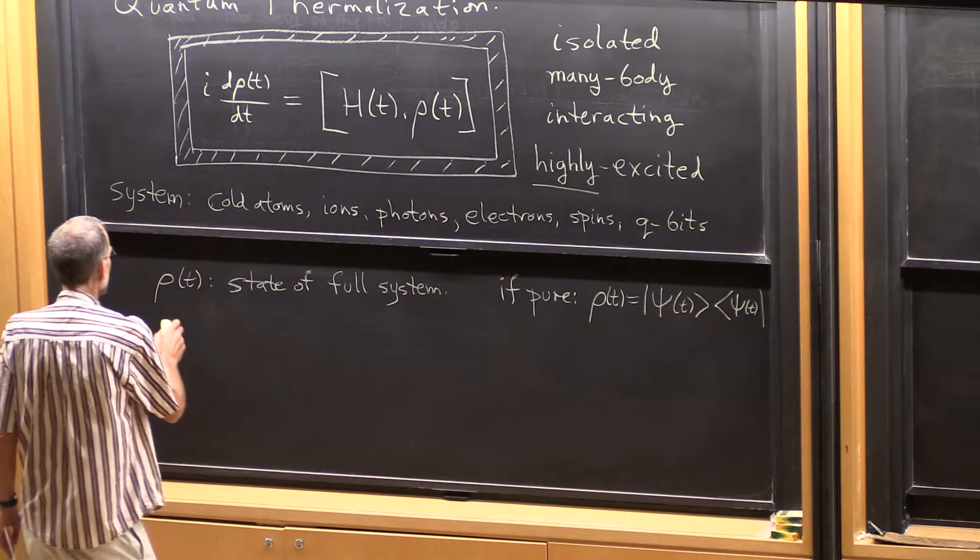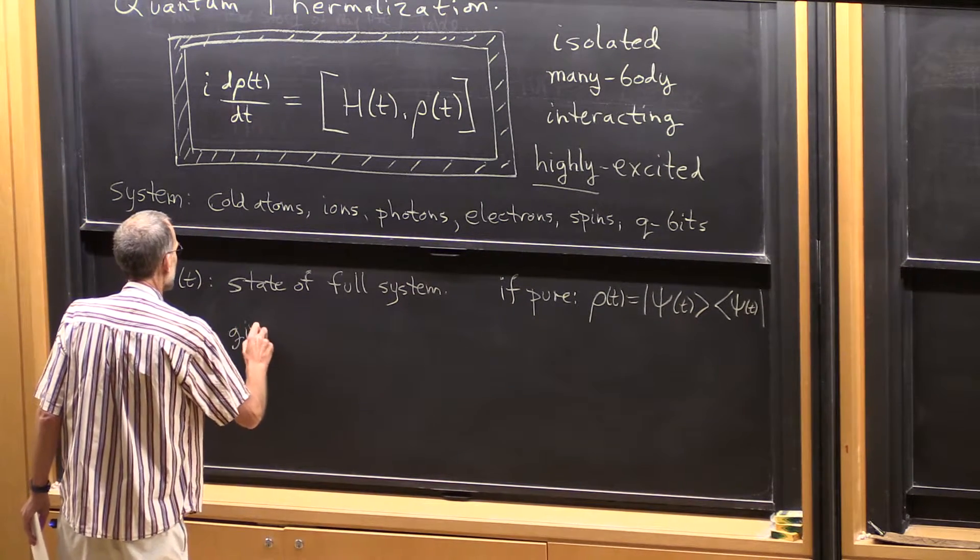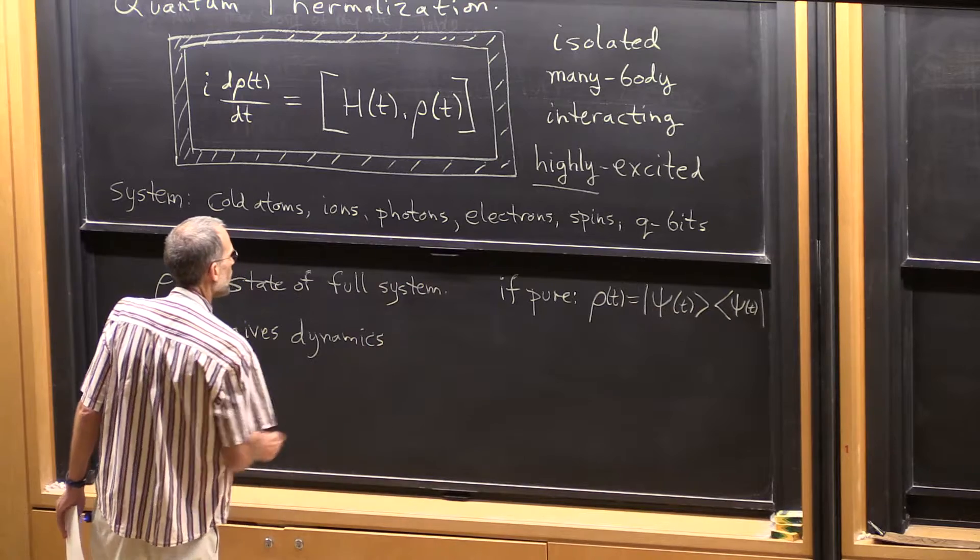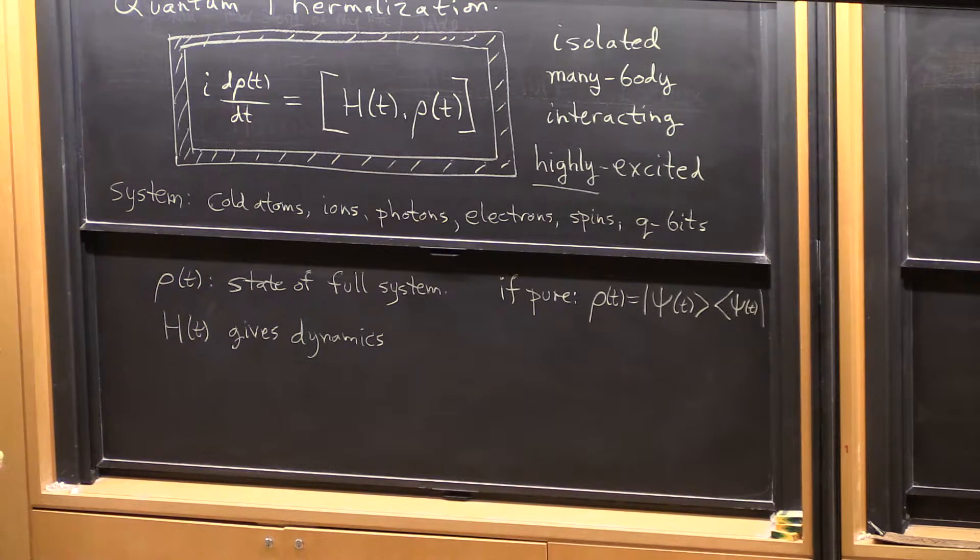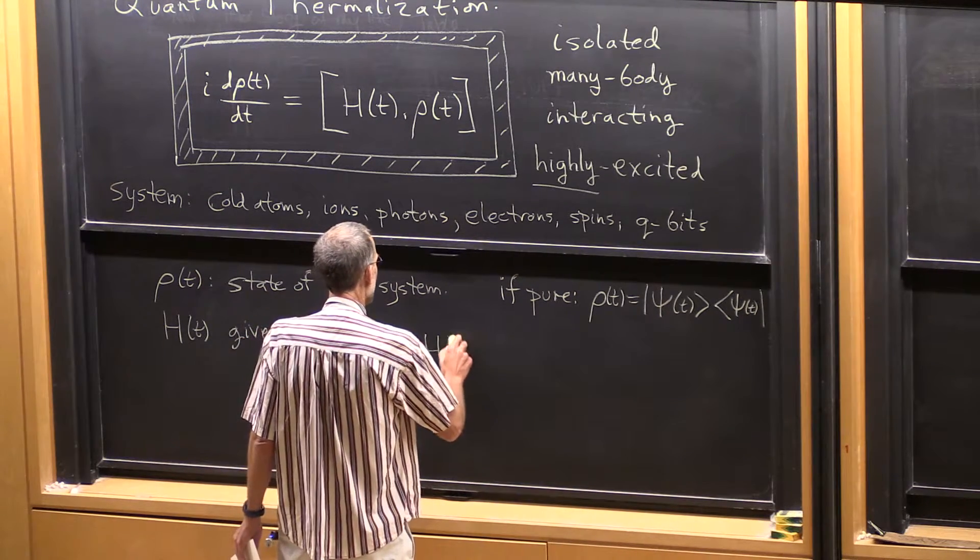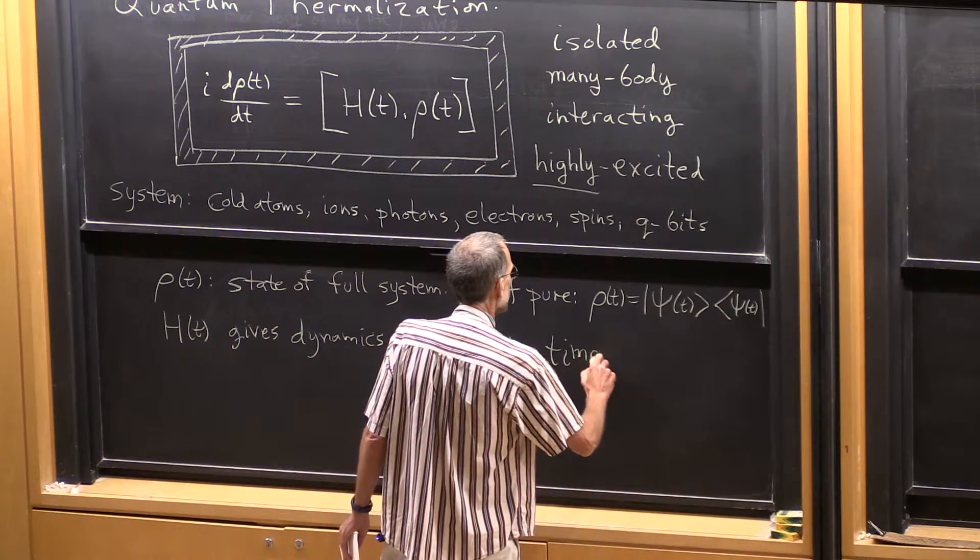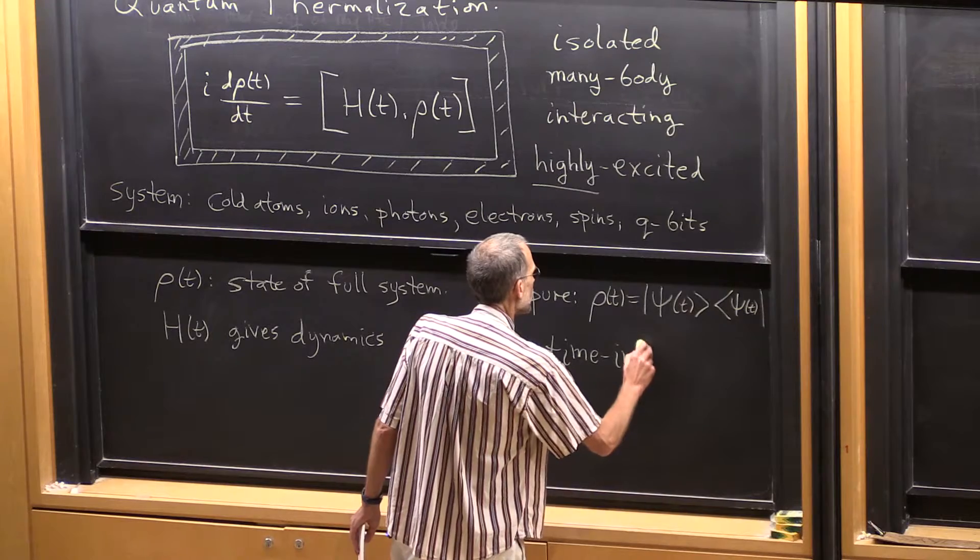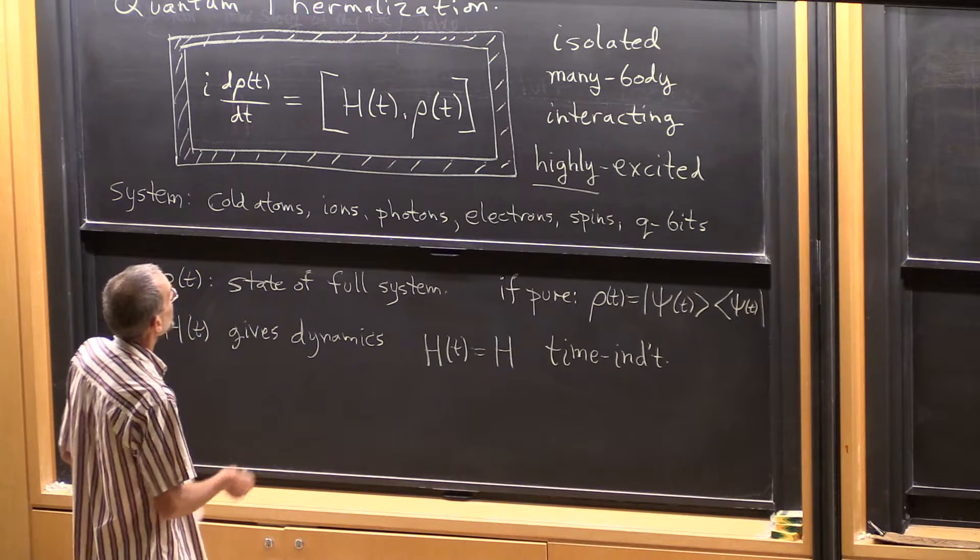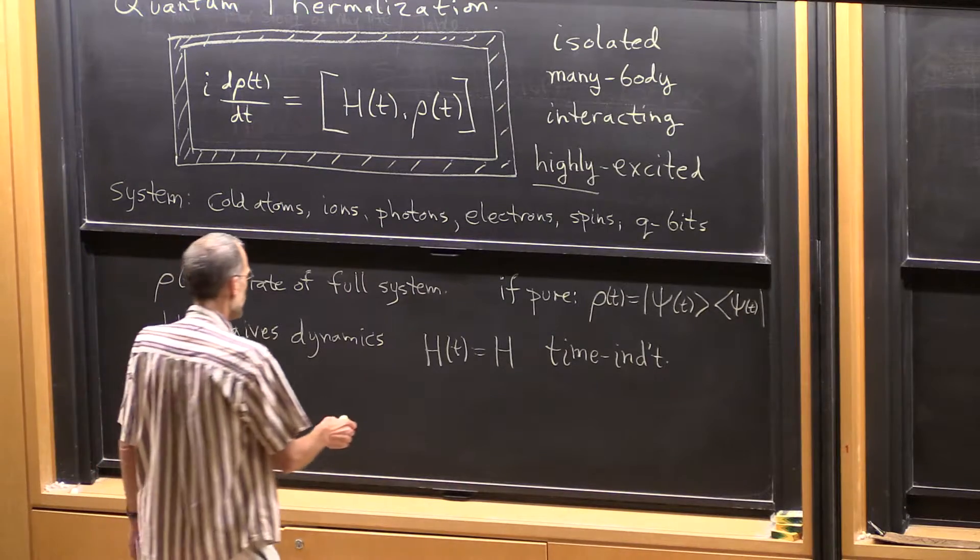Now the dynamics is given by a Hamiltonian, h of t. So this gives the dynamics. And we're interested actually in two cases. One case is h of t equals h, it's time independent. That's one case of interest, and that's a truly isolated system, so it's not being driven by something external.